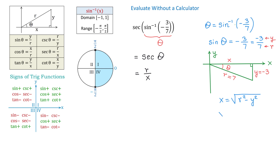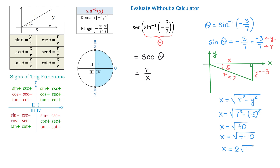Then x equals the square root of 7 squared minus negative 3 squared. 49 minus 9 is 40, so x equals the square root of 40. We can simplify this radical by writing 40 as a product of 4 and 10, and the square root of 4 is 2. Then x equals 2 square root of 10.